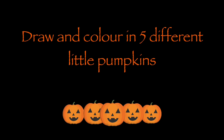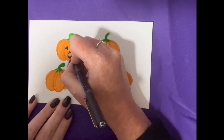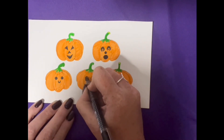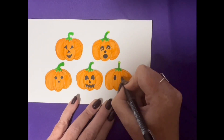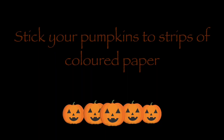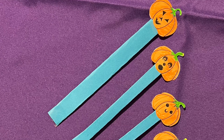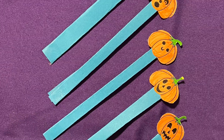For this poem we need five different little pumpkins. You could draw all five yourself, giving each one a different type of face, or you could do one and team up with four friends. When you have all five pumpkins, you need to cut five strips of coloured paper and stick one pumpkin to the end of each strip.